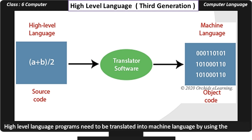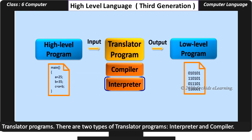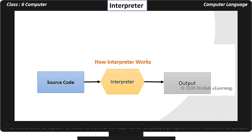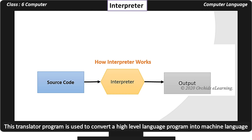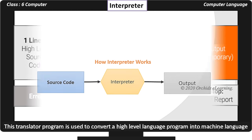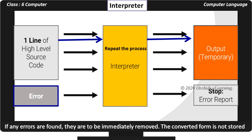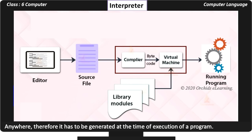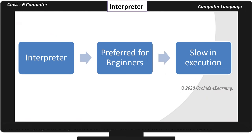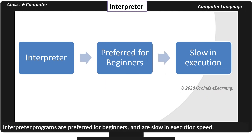High level language programs need to be translated into machine language by using translator programs. There are two types of translator programs: Interpreter and Compiler. An interpreter is used to convert a high level language program into machine language. An interpreter translates line by line, executes the instruction, and then repeats the procedure for all the instructions. If any errors are found, they are to be immediately removed. The converted form is not stored anywhere; therefore it has to be generated at the time of execution of a program.